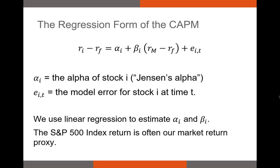The regression form of the CAPM is a little different from the model form. In the model form we had R sub I on the left-hand side and the risk-free rate R sub f on the right-hand side, with no alpha and no error term. The regression form says the risk premium on a stock — the difference between a stock's return and the risk-free rate — should equal some alpha plus beta times the market risk premium plus an error term. R sub I is the stock's return in a given period, say a given month, minus the risk-free rate, say the yield on a T-bill.